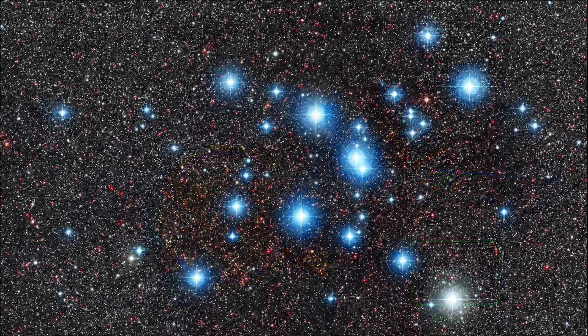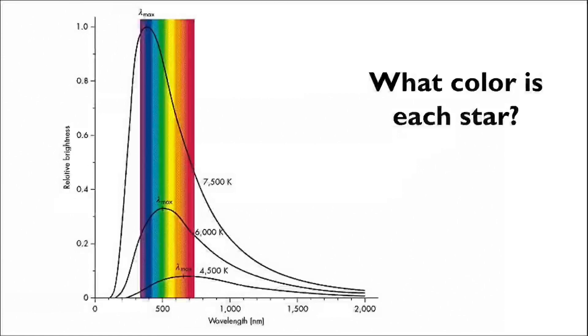We already know the colors of stars we most often see are blue, white, and red. The reason we see stars in these specific colors is because of where their peak wavelengths land in the visible range of light.